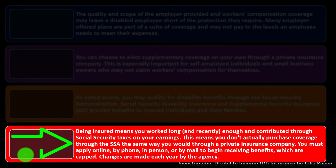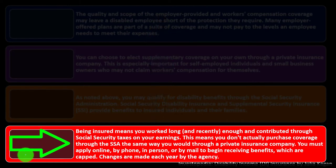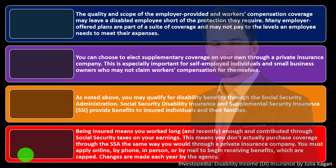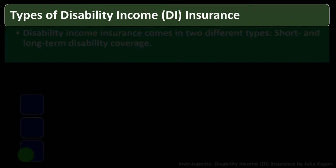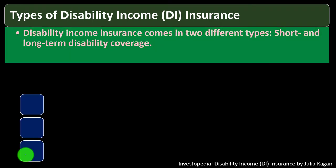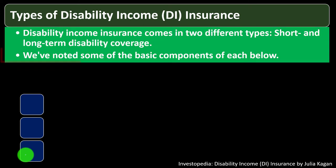You don't actually purchase coverage through the SSA the same way you would through a private insurance company. You must apply online, by phone, in person, or by mail to begin receiving benefits, which are capped — changes are made each year by the agency. Disability income DI insurance comes in two different types: short-term and long-term disability coverage.